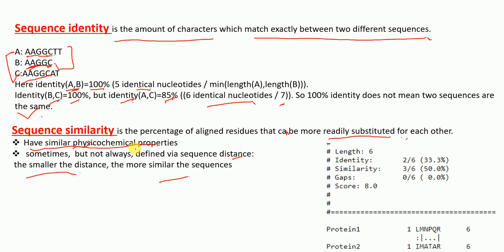So look at this example. We have protein 1 and protein 2, and this is the end result of the sequence alignment. The identity percentage is 33.3%. In both proteins we have six amino acid bases, and out of which only M and R are the identical characters — two out of six is 33.3%. This is the percentage identity.